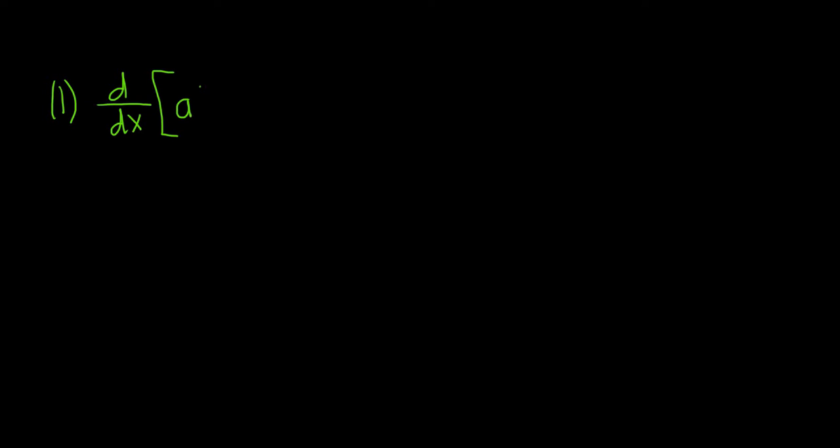The first formula we're going to look at is the formula for the derivative with respect to x of an exponential function, a to the x. So a here is a base, so a here is positive and it's not equal to 1. The formula says that this is equal to a to the x times the natural log of a. Pretty easy to memorize this formula.